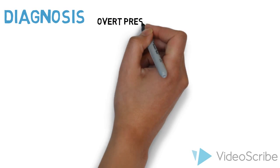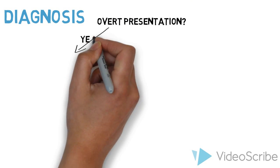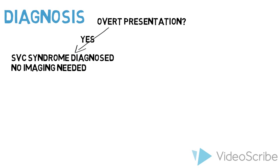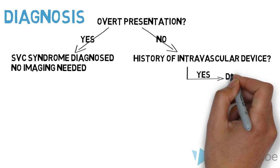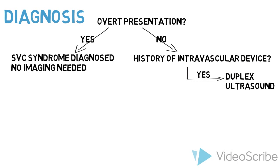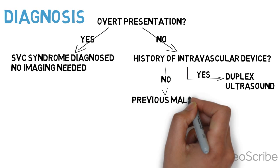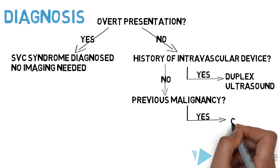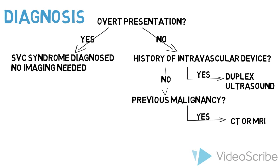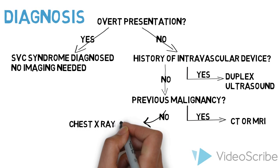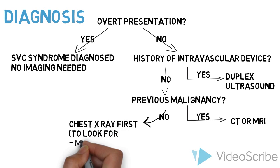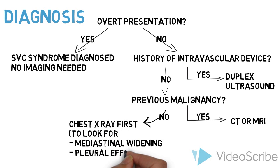SVC syndrome can often be diagnosed clinically in patients with overt presentations. However, patients with a history or physical that are only suggestive of SVC obstruction may require further diagnostic imaging. If a patient has a history of an intravascular device, a duplex ultrasound can be done to evaluate any thrombosis in the upper extremity. If a patient has a history of malignancy, a CT or MRI may be warranted to evaluate the degree of blockage and cause of obstruction. If there is no history of either, a chest x-ray may be done first to assess for mediastinal widening or pleural effusion.